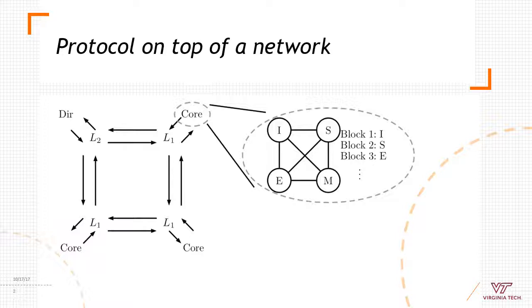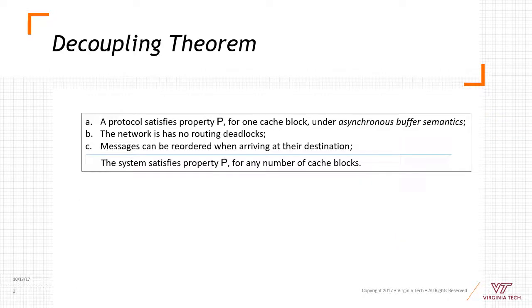Our theorem shows that compositional verification is possible. This requires three steps. First, one has to verify the protocol without the underlying network. That is, one can verify the protocol in isolation. Moreover, at this step it's only necessary to verify this isolated protocol for one cache block only.